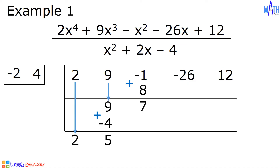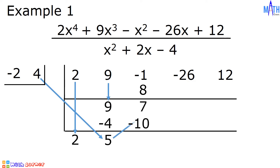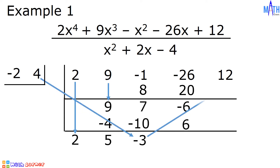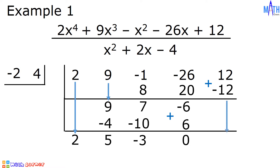We will repeat the process. Negative 2 times 5 is equal to negative 10. 4 times 5 is equal to 20. Let us add. 7 plus negative 10 is equal to negative 3. Negative 26 plus 20 is equal to negative 6. Next, negative 2 times negative 3 is equal to 6. 4 times negative 3 is equal to negative 12. Let us add. Negative 6 plus 6 is equal to 0. 12 plus negative 12 is also equal to 0.